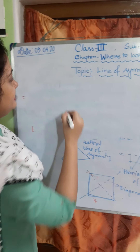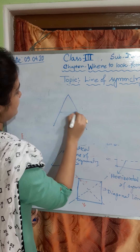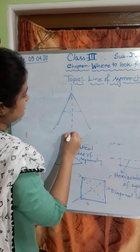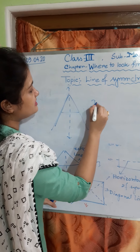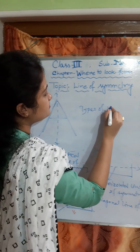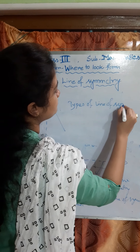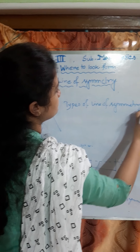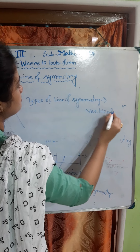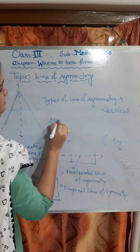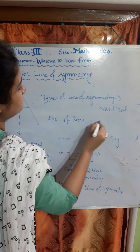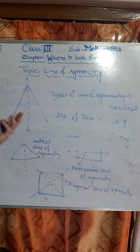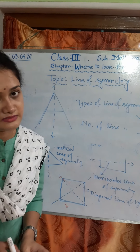So with alphabet A, if we write it again and draw the standing line in the middle, the type of line of symmetry is vertical. And the number of lines of symmetry is one. You can also find the number of lines of symmetry and the type of line of symmetry in this way.